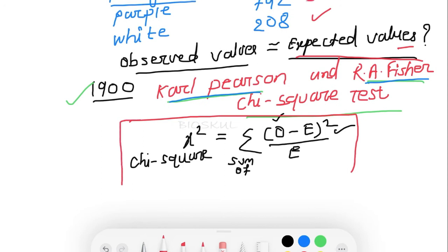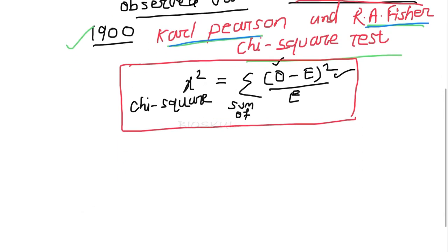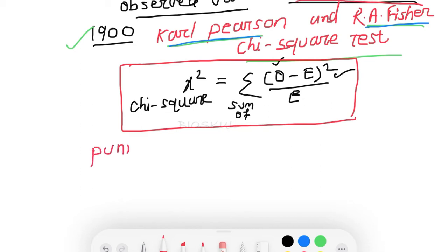So this is the formula for chi-square test. In this question, we already have our observed values. Now we have to calculate the expected values — only then can we calculate the chi-square value. We can calculate the expected value using the Punnett square.